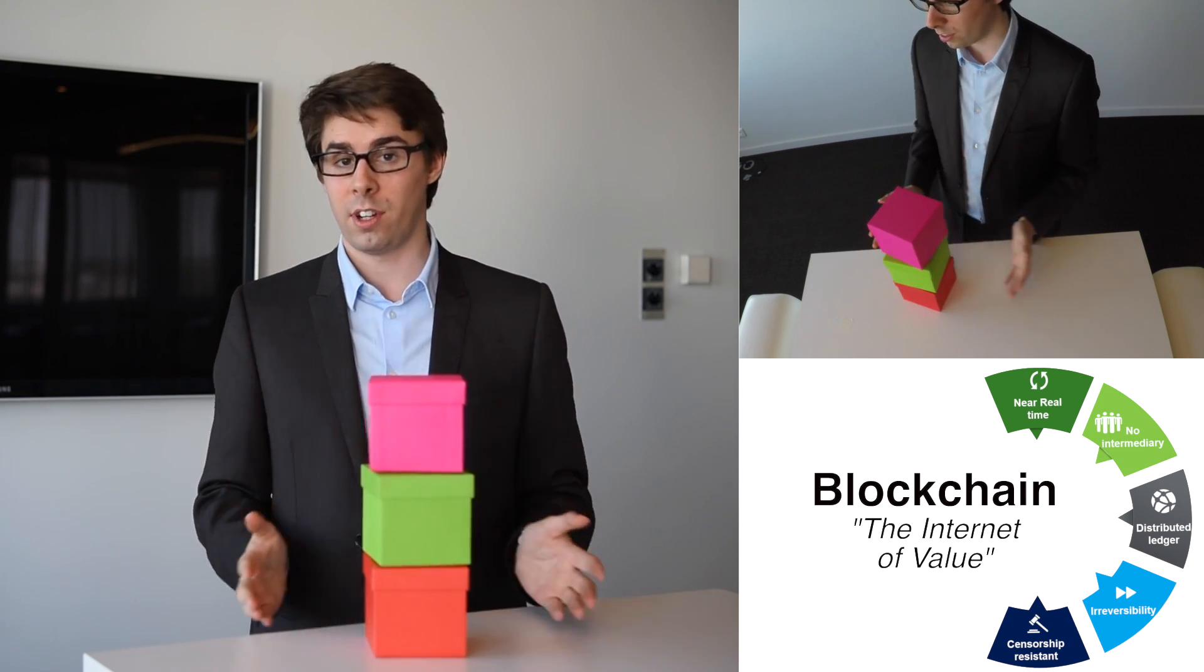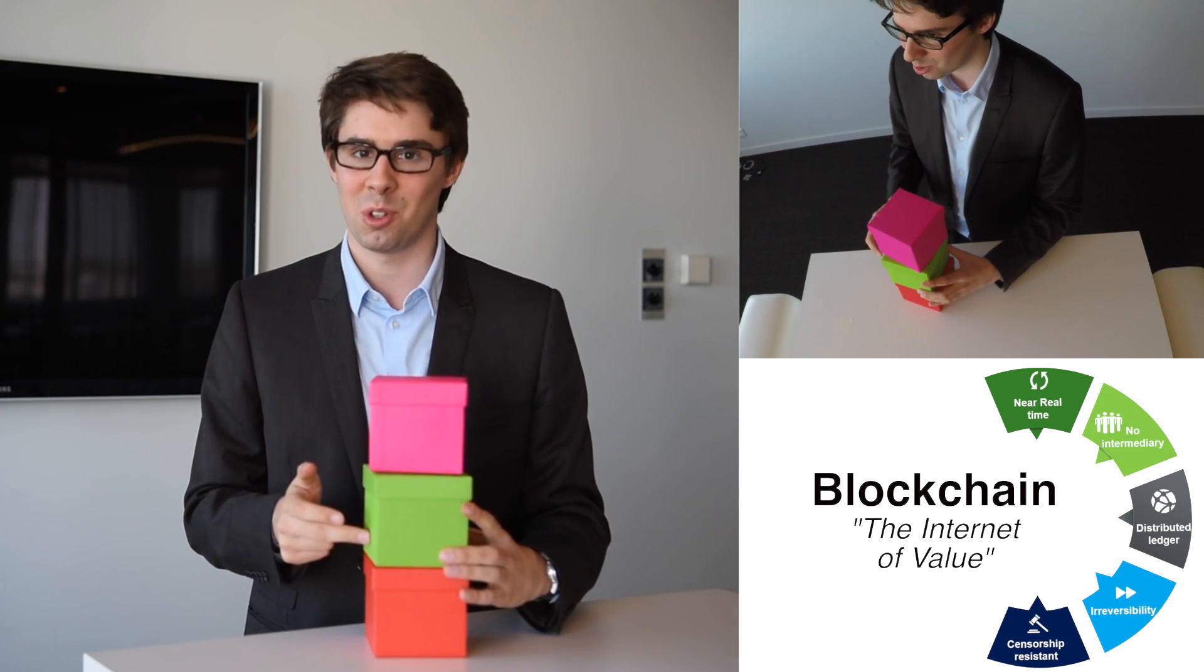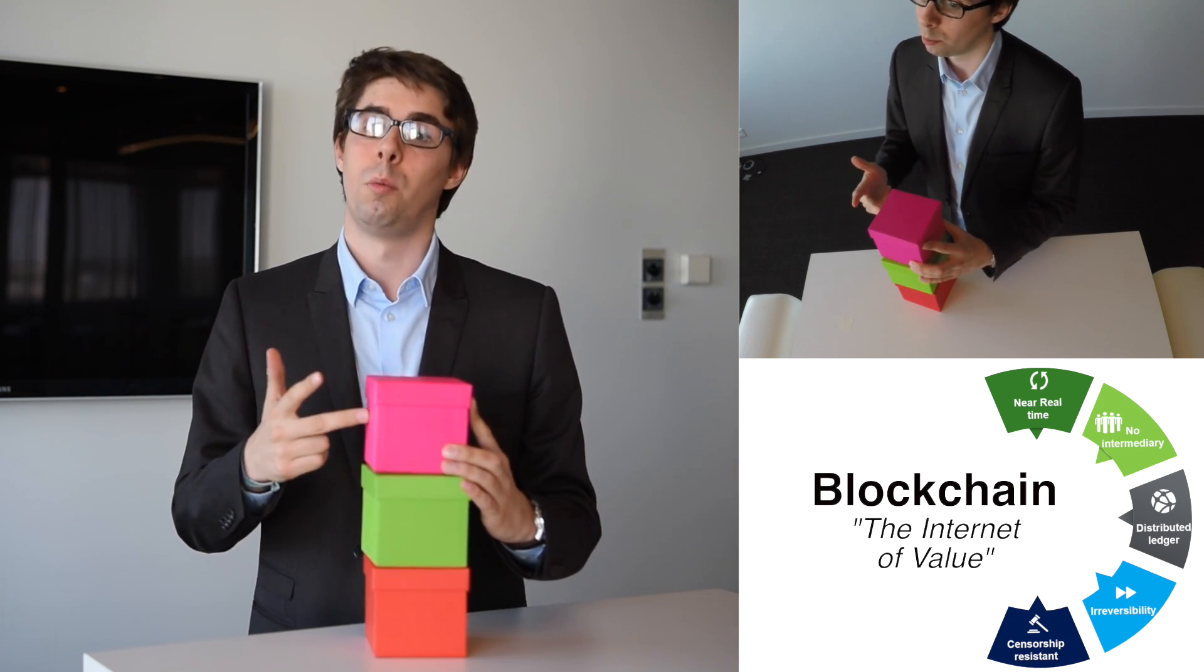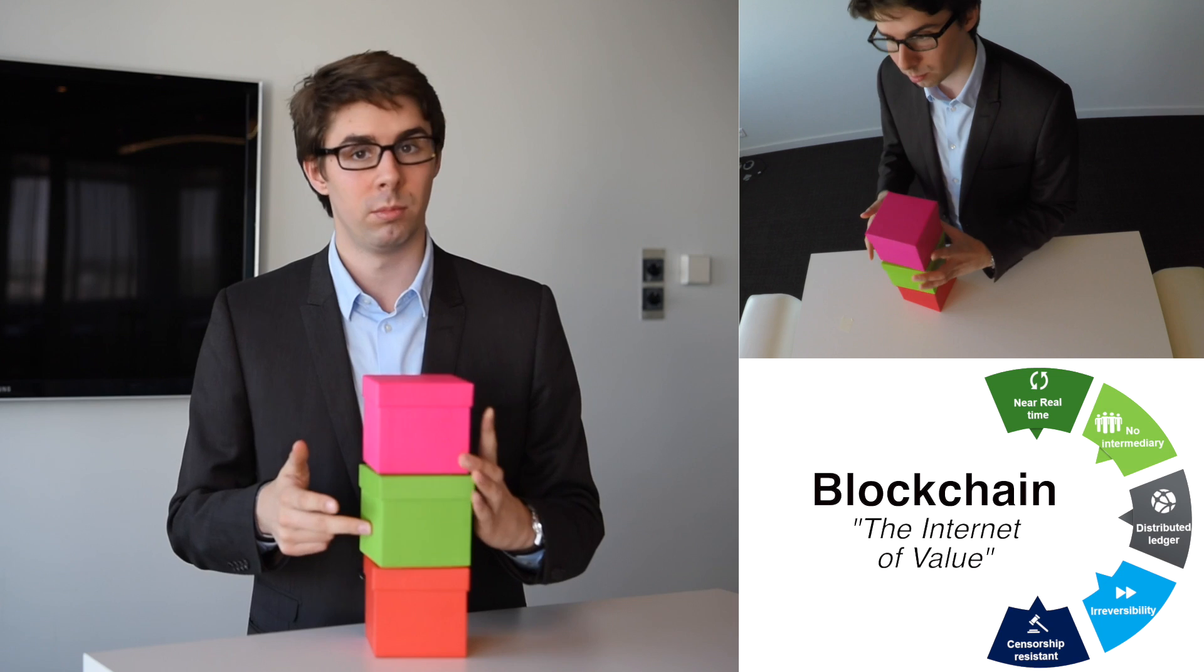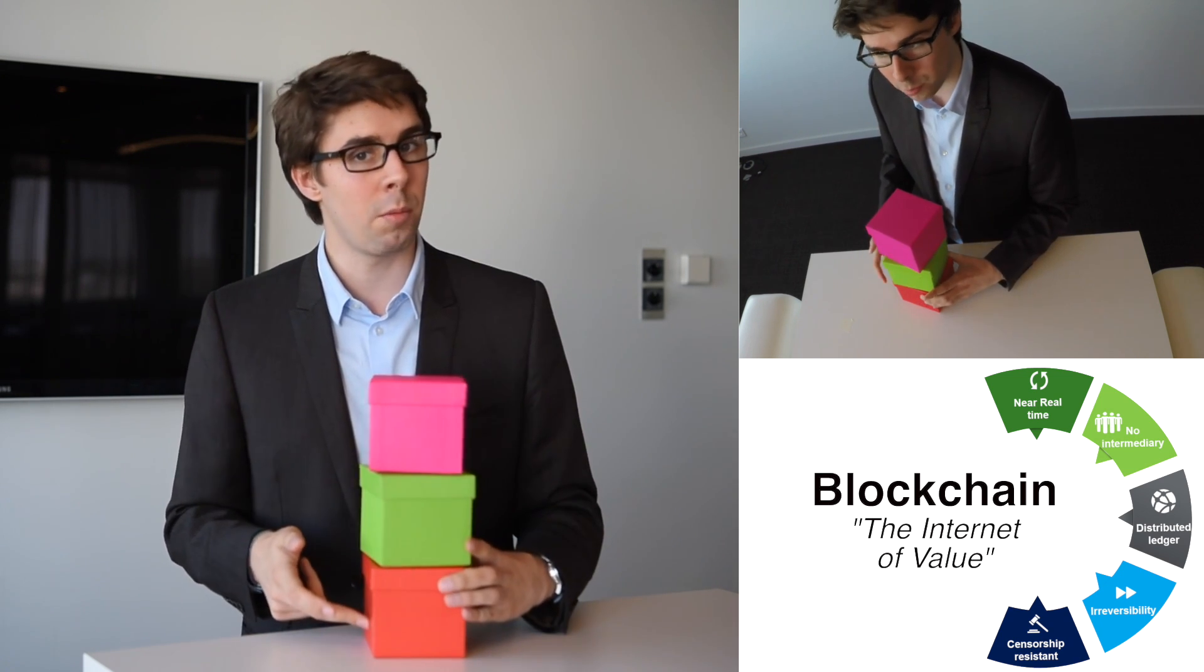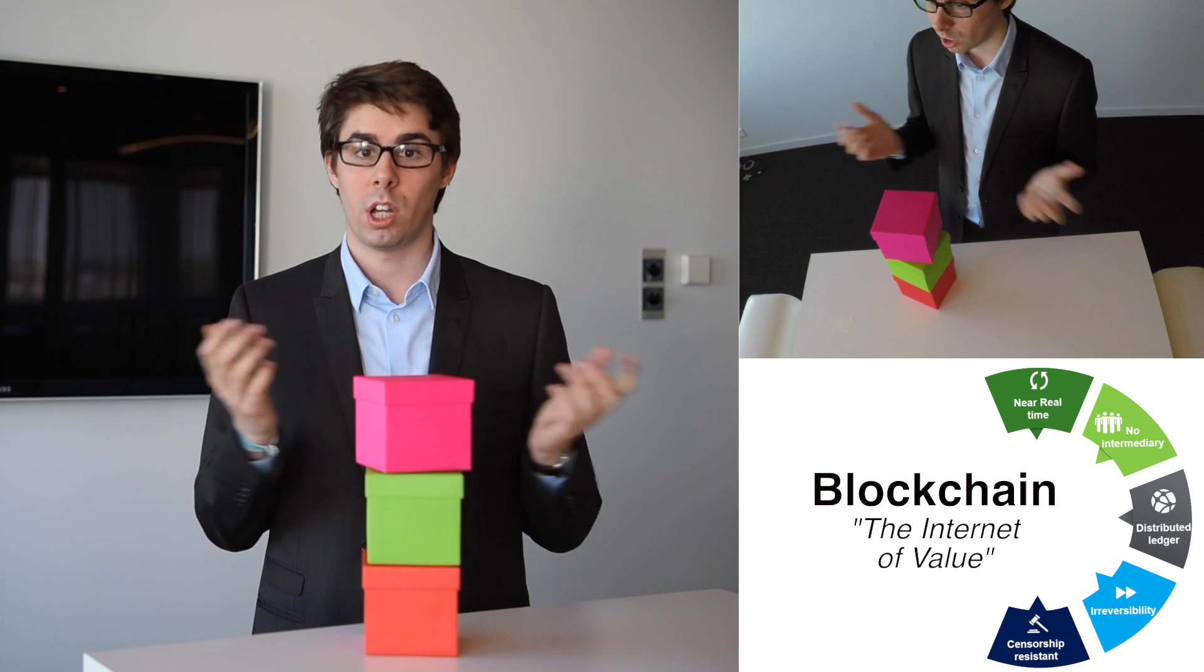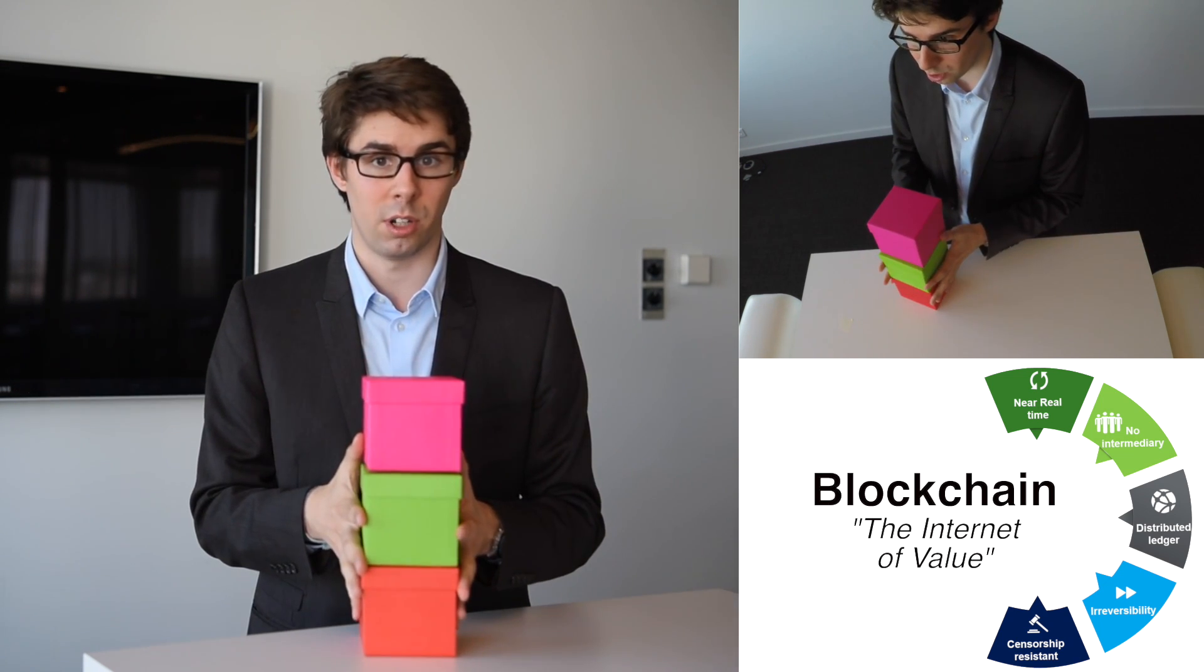So we do have here a sequential order of blocks. Block number one, block number two, and block number three. Each of these blocks, they refer to the previous one. Block number three says, I'm linked to block number two. And block number two says, I'm linked to block number one. So we have a chain of blocks. And there you go, blockchain. It is just that simple.